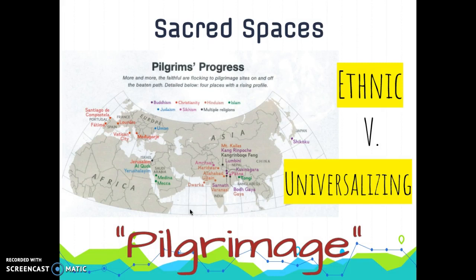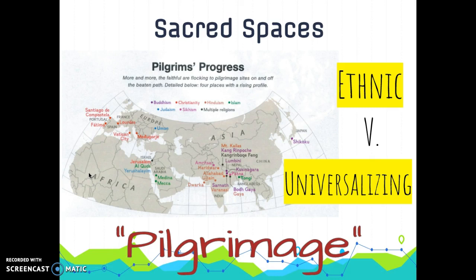Let's move on to sacred spaces and compare ethnic and universalizing religions. A universalizing religion usually associates holiness with cities and other places influential to the founder's life — for instance, where Buddha or Muhammad was born — and these are not necessarily related to the physical environment. However, ethnic religions have a less widespread distribution of sacred spaces, and they are typically related to the physical environment. A pilgrimage is when an adherent of any religion makes a journey to a place considered sacred.